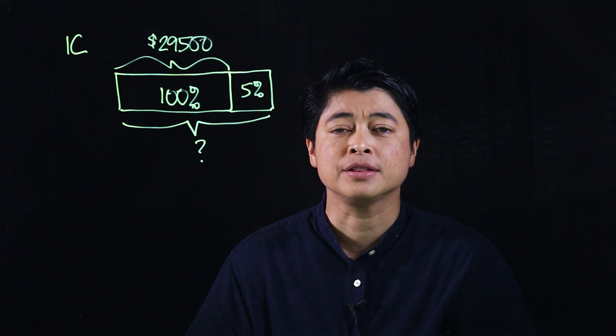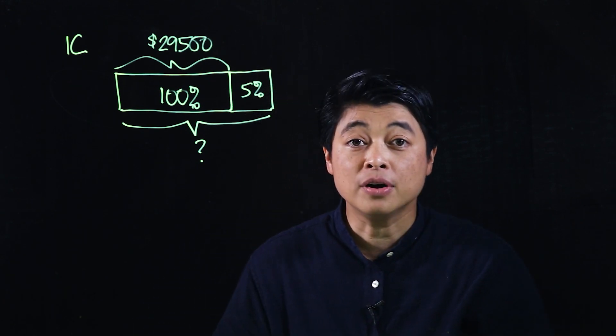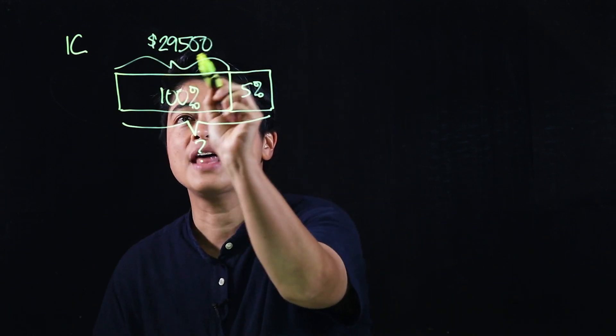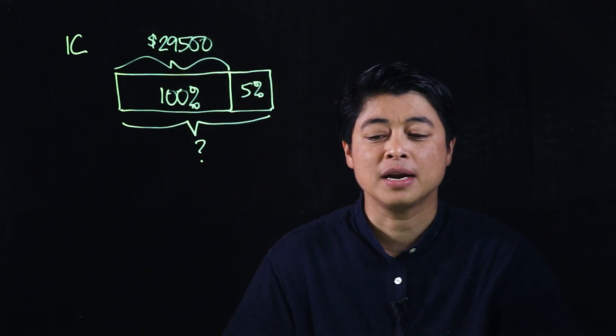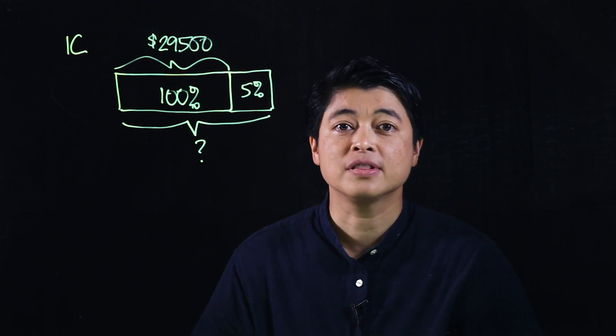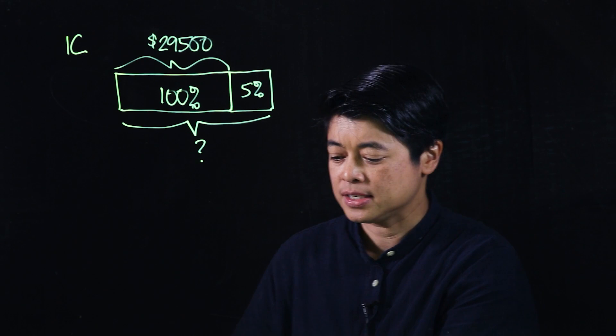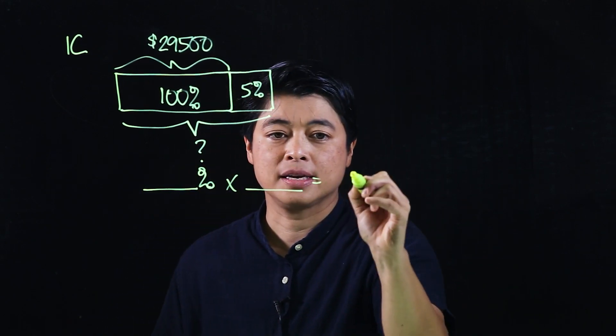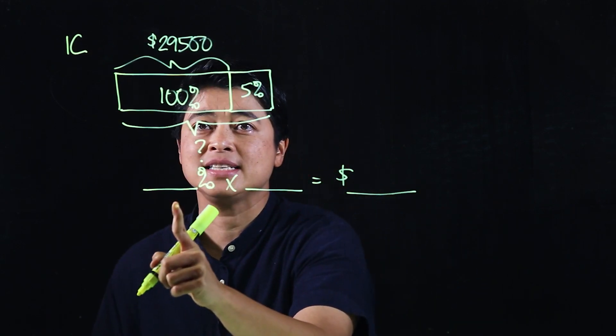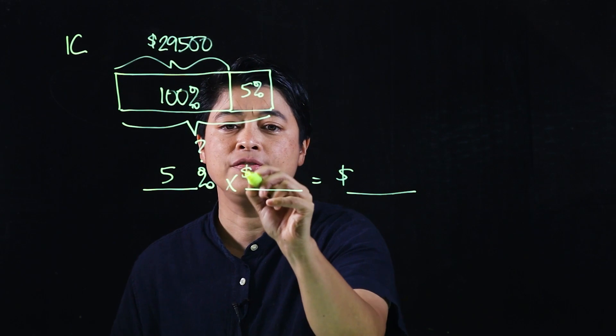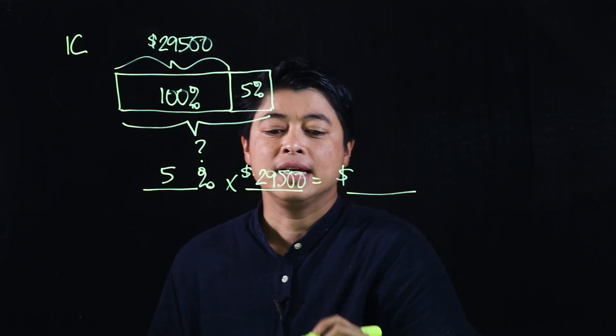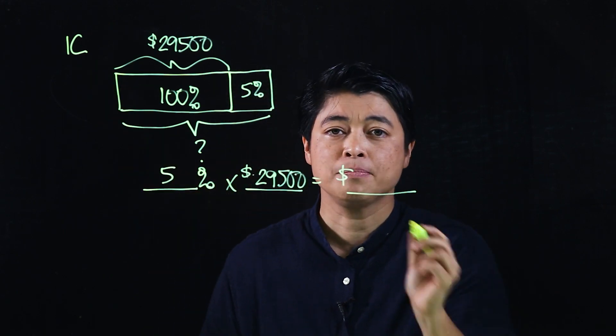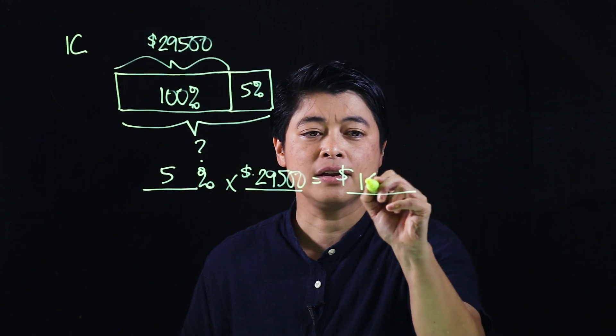The question is how much does he have at the end of one year. In theory, what he has is what he originally had plus the 5 percent that he earned. In the book, they first find the interest and then add it on. The box says blank percent times blank equals blank, so that means 5 percent of $29,500. If I use my calculator, because this has a calculator picture, this would be $1,475.